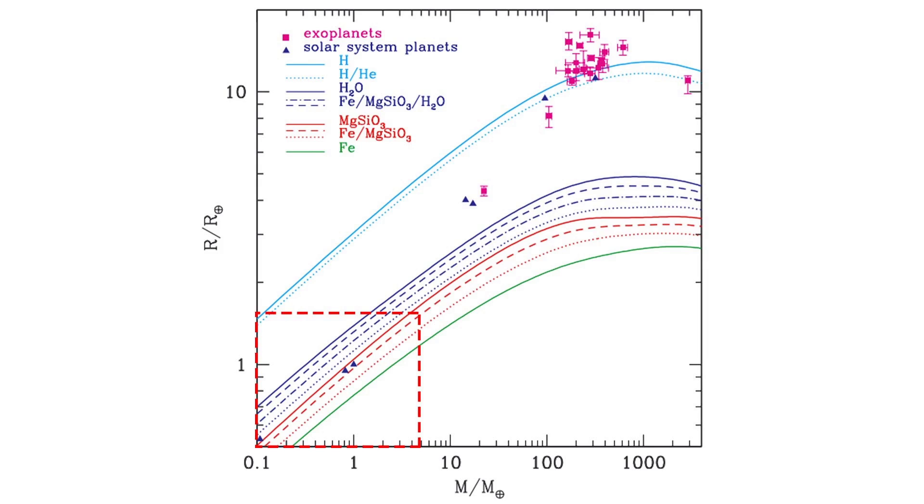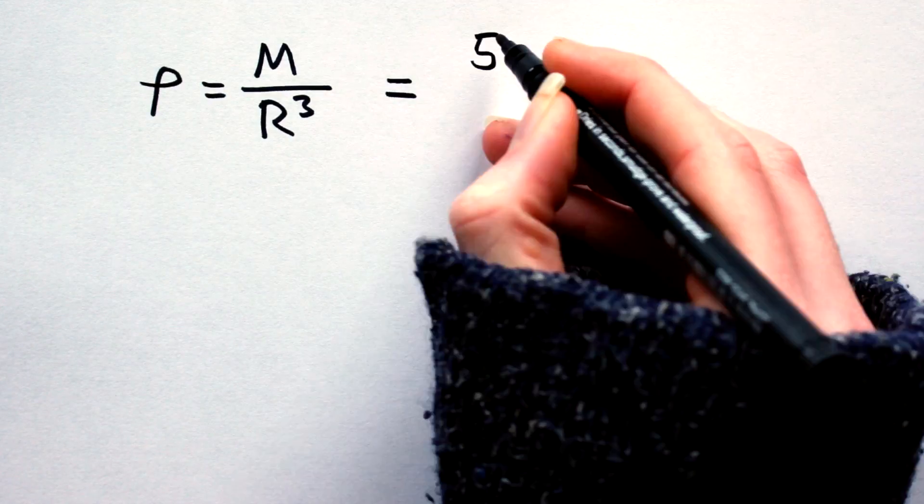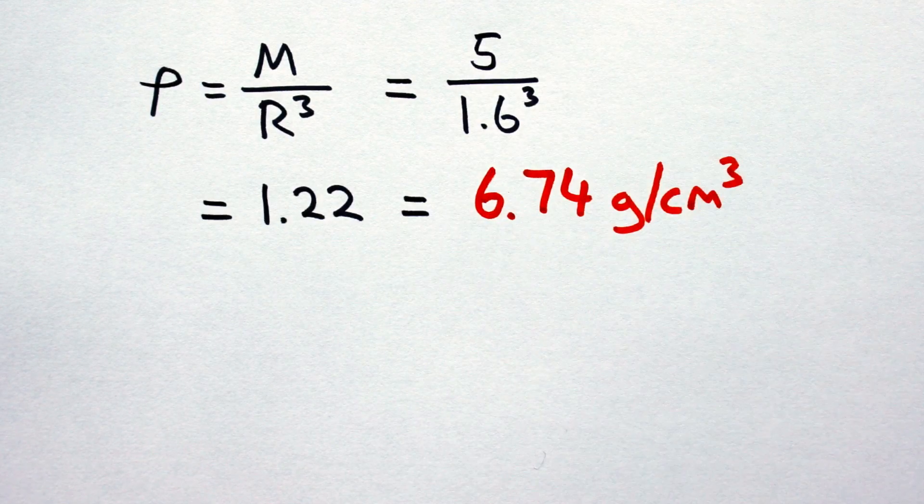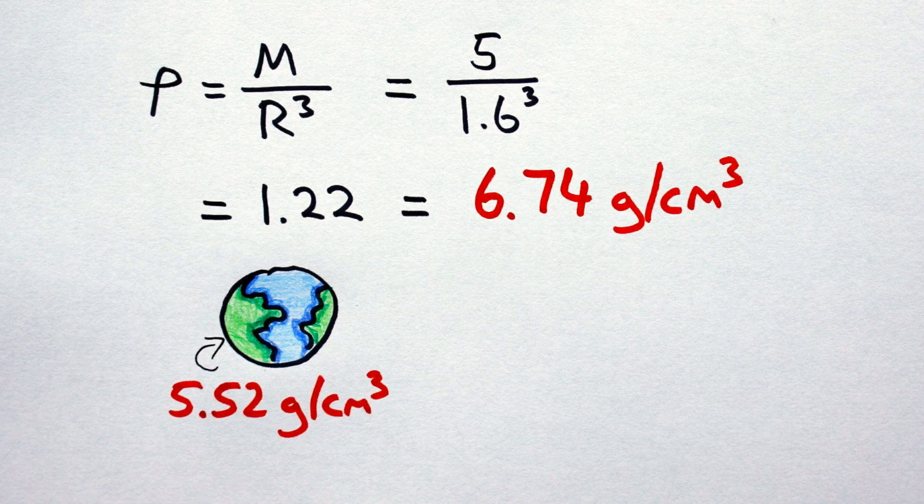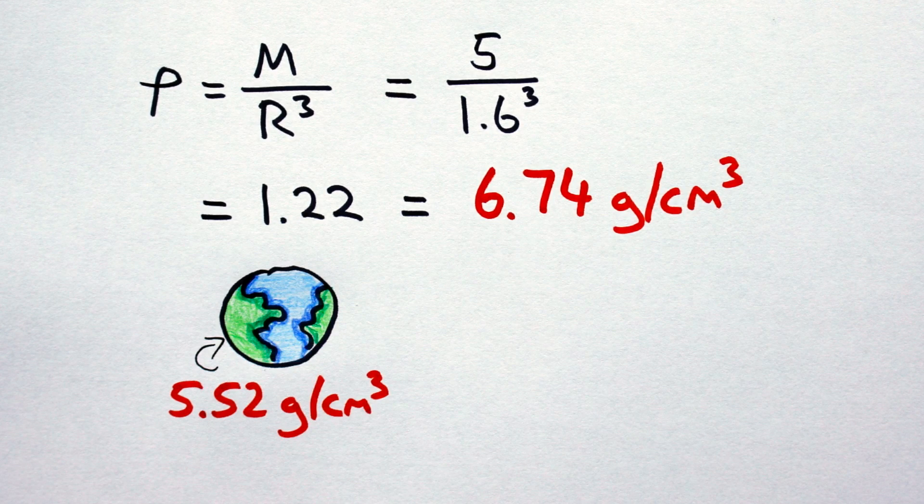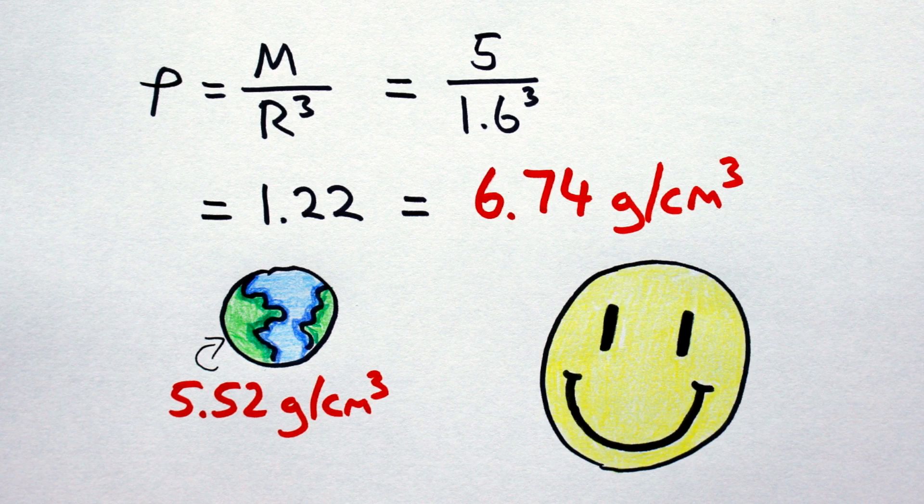So then, let's work with that 1.6 value. This sets our mass at about 5 Earth masses. Thus, our density will be 6.73 grams per centimeter cubed, which, considering the Earth's density is 5.52 grams per centimeter cubed, is finally looking a little more like it.